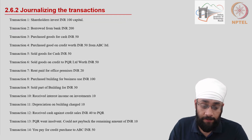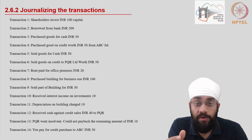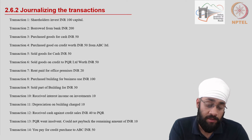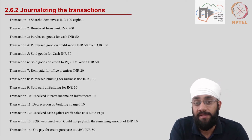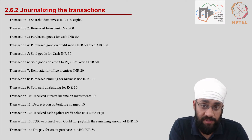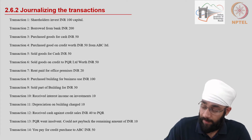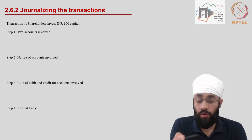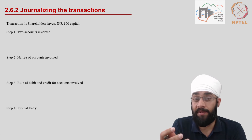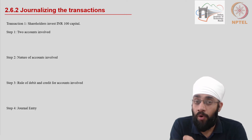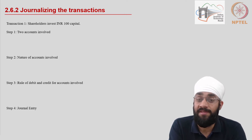Now let us look at a list of transactions. I have about 14 transactions on the screen, and these transactions simulate different kinds of transactions which would happen in a business — sample transactions. We are going to take each transaction one by one and try to write a journal entry. We are going to follow four steps in order to arrive at the journal entry, which is what you write in the book called journal.